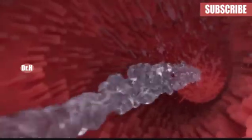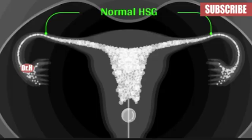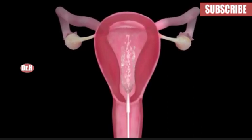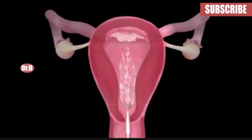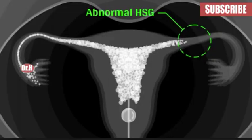This contrast then travels through the fallopian tubes. If both fallopian tubes are open, as you can see, the contrast passes out of them and enters the abdominal cavity. This is the x-ray of a normal HSG. If one tube or both tubes are blocked, the contrast is not able to pass through the fallopian tubes.